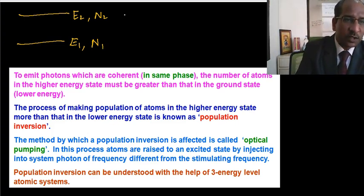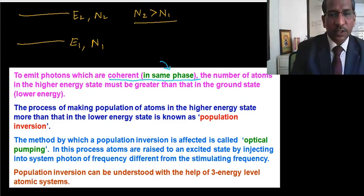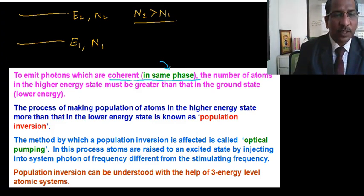The requirement is, for coherent light, they are saying N2 should be larger than N1. Only then can one get this coherent light, which is required. And coherent means all the photons are in the same phase. So this is the first point.